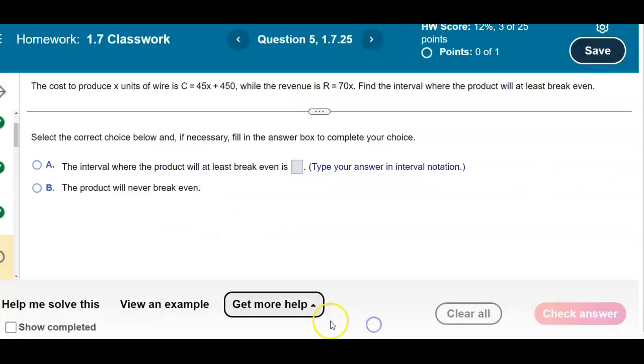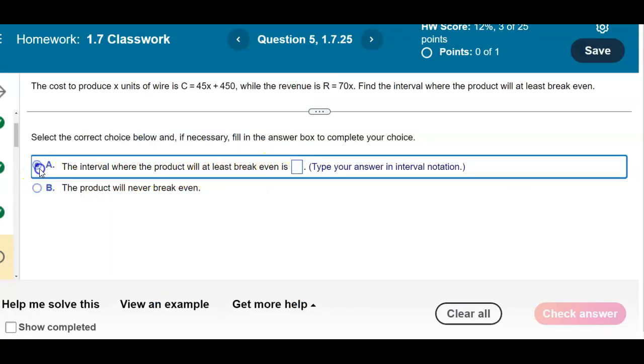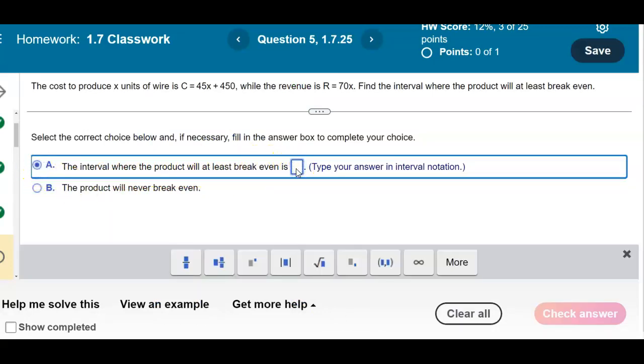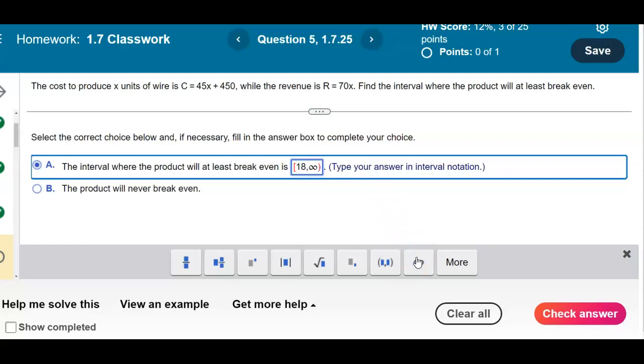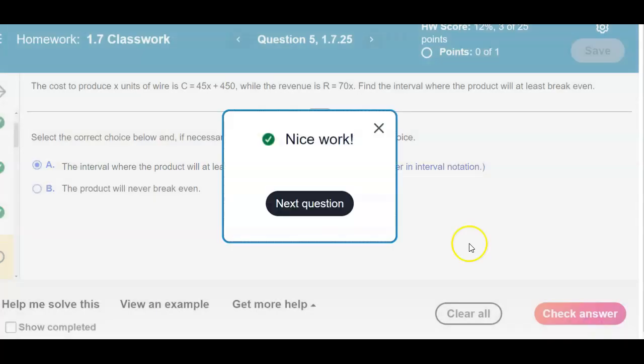So let's go ahead and write our answer. It's saying the interval where the product will at least break even is the following. So we're going to have bracket 18 comma infinity with a parentheses. Check our answer. And there is our result.